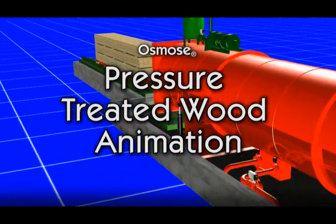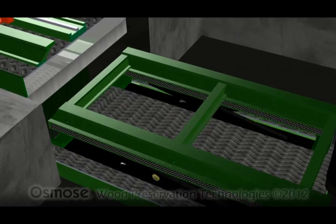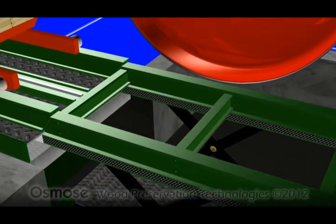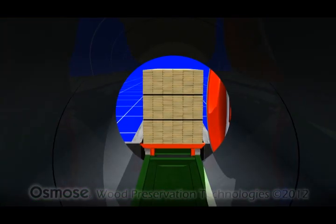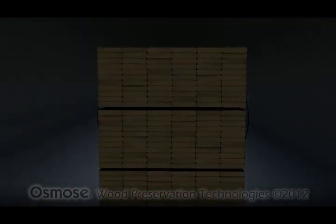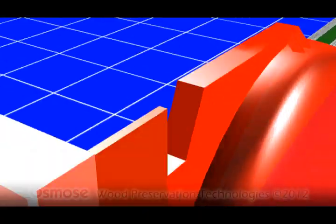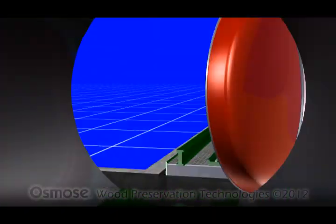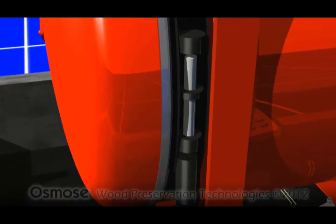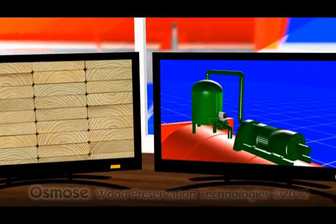The pressure treatment process begins with untreated wood products being transferred into the treatment cylinder. Once the wood is inside the treating cylinder, the door is closed and sealed, and a computerized process control system starts the pressure treatment process.